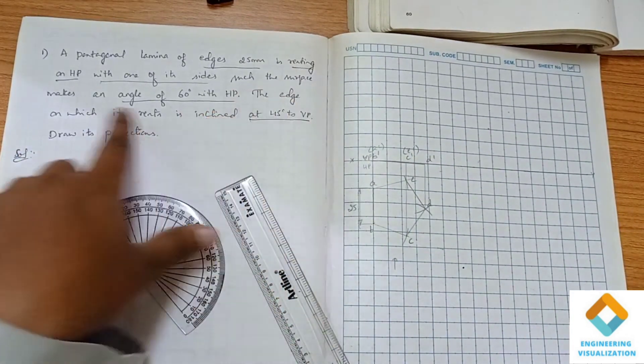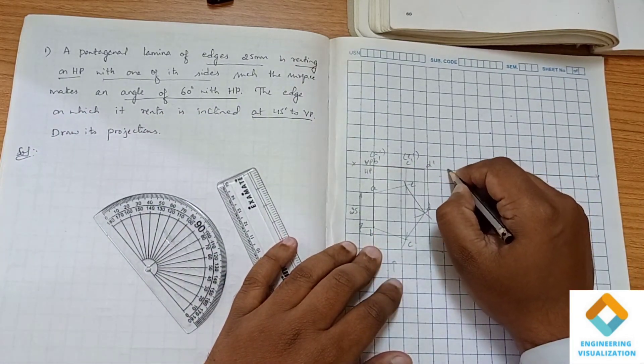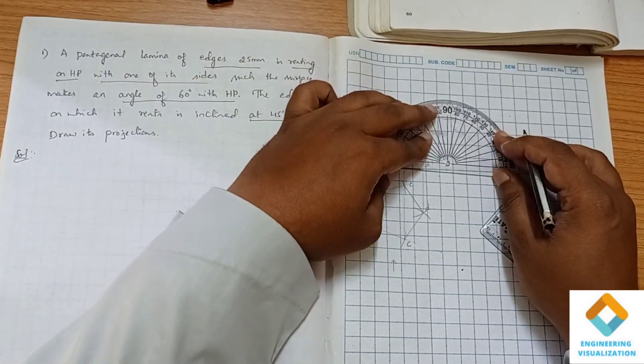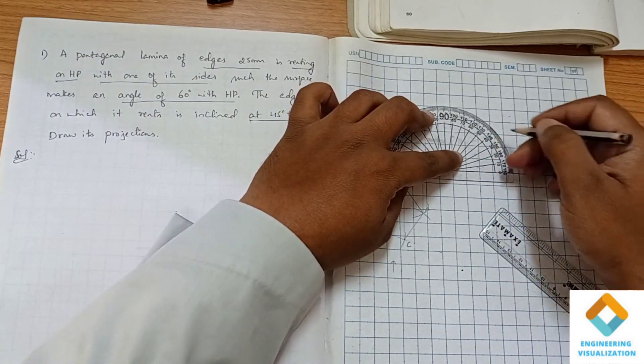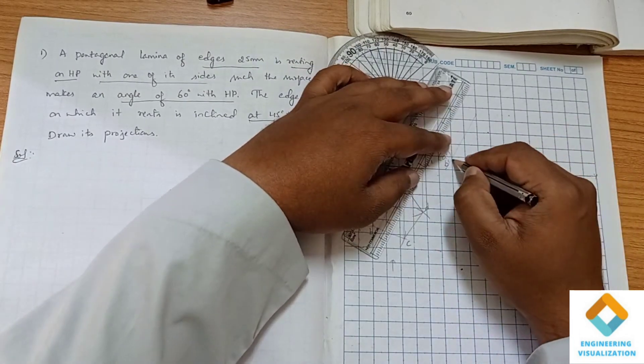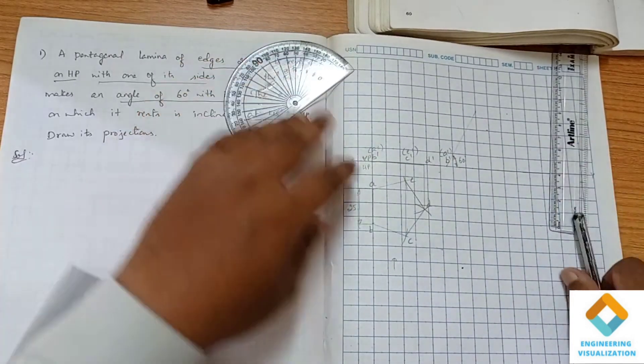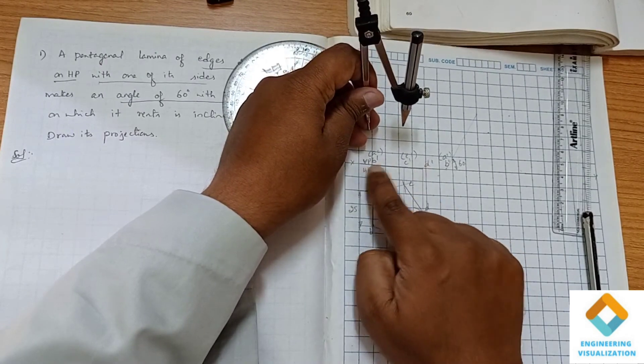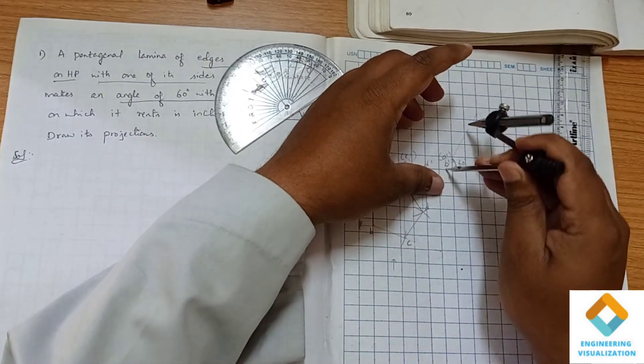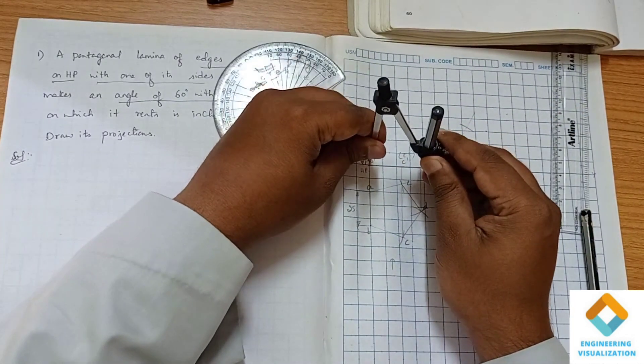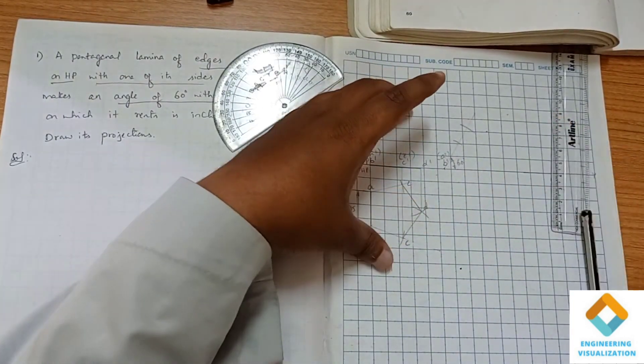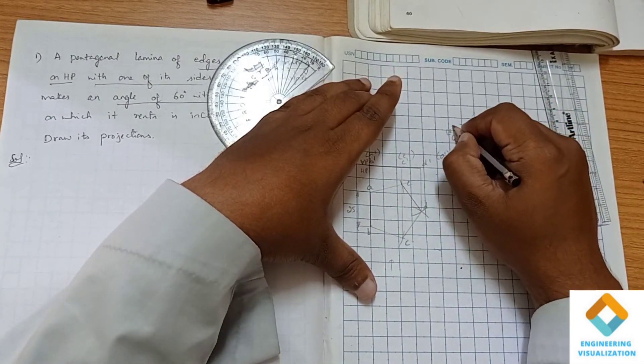We have to make such that the surface makes an angle of 60 degrees with HP. For that we will take a reference here first, that is B dash A dash. Now we will be marking at an angle of 60 degrees. Now carefully we have to cut two arcs from B dash to D dash and B dash to C dash. Now write the notations, this is C dash and this is D dash.